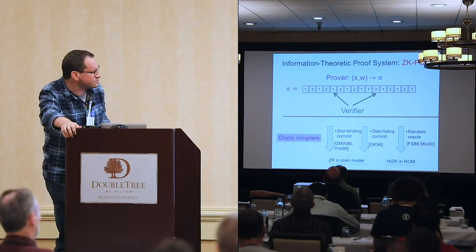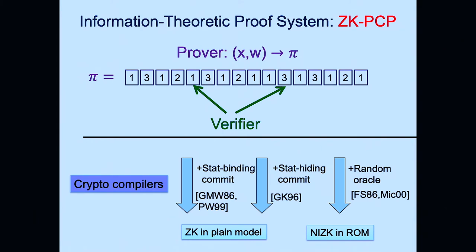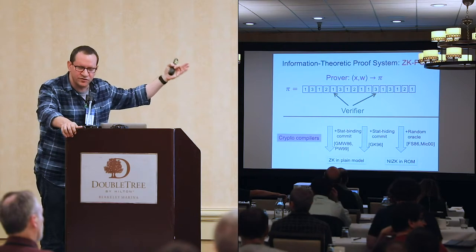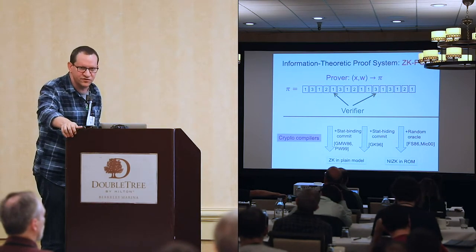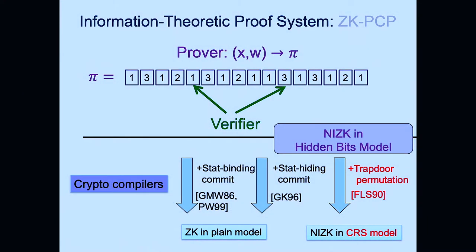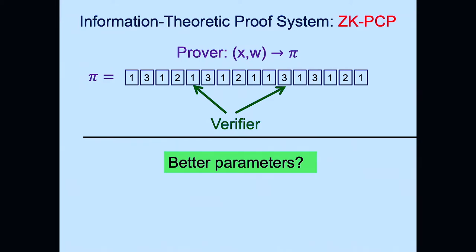We can abstract the difficult part of the GMW zero-knowledge proof as a crypto compiler that takes any zero-knowledge PCP and compiles it into an actual zero-knowledge proof in the plain model. Different compilers exist in the literature depending on whether you want constant rounds, computational soundness, or the random oracle model. The Fiat-Shamir heuristic gives non-interactive zero-knowledge in the random oracle model; the traditional complexity-based NIZK works in the CRS model.